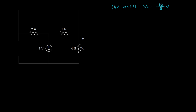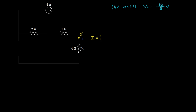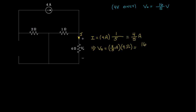Now we'll set the 4-volt and 2-amp sources to 0, keeping only the 4-amp source. Because the 4-ohm and 1-ohm resistors are in parallel, the current through the 4-ohm resistor can be found by current division: 4 amps times 1/5, giving 4/5 of an amp. The resulting voltage VO equals 4/5 amp times 4 ohms, which is again 16/5 of a volt.